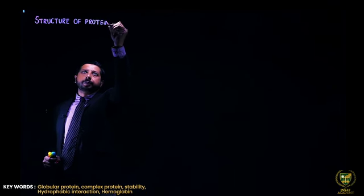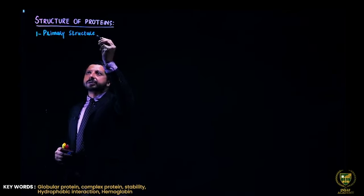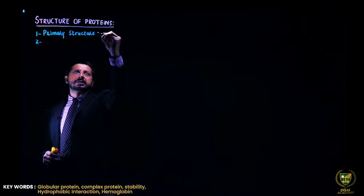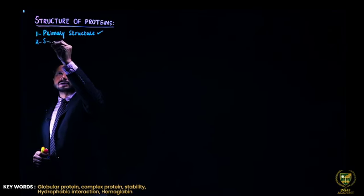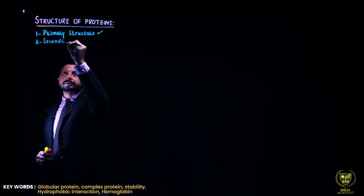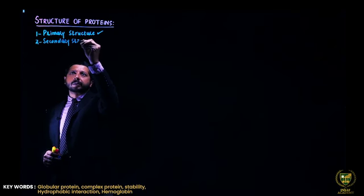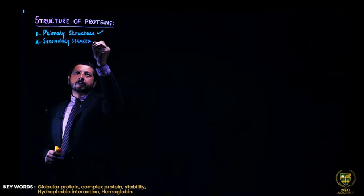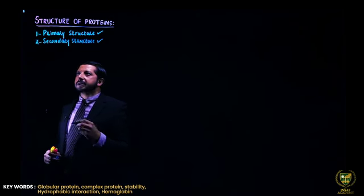So far we have organized proteins at two levels: the primary structure and the secondary structure. Today we will finalize the whole structure. The primary structure has been completed, and the secondary structure was completed in the previous lecture.